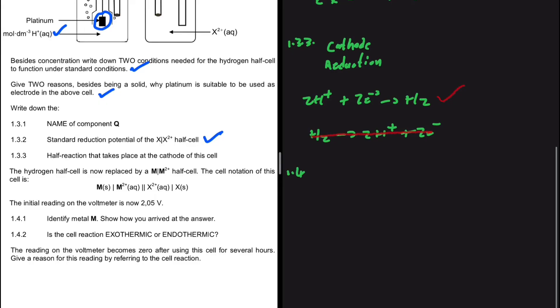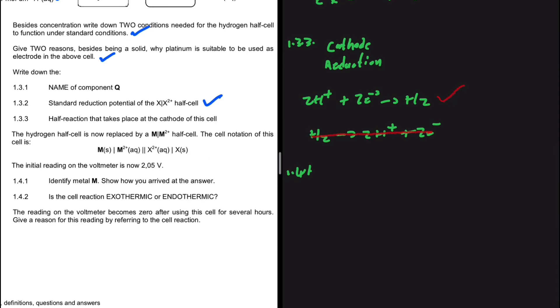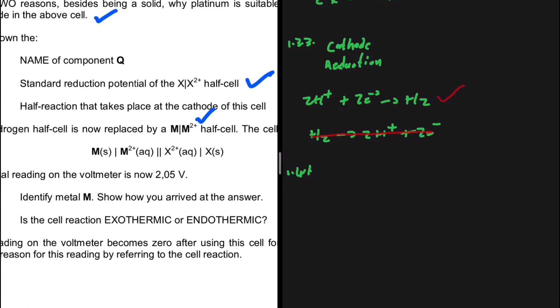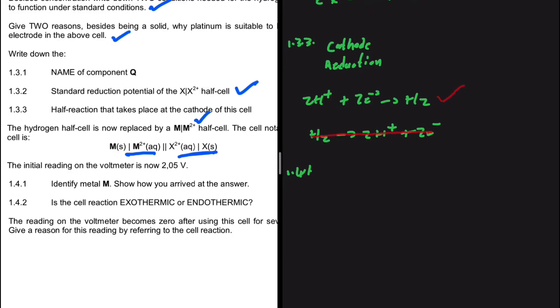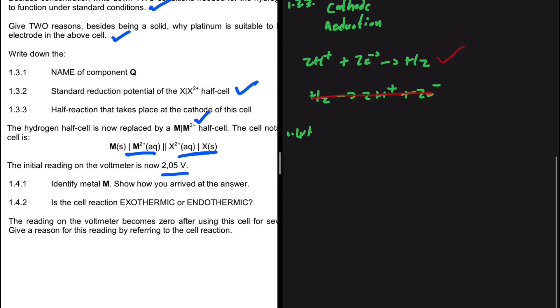1.4.1. The hydrogen half-cell is now replaced with an M/M2+ half-cell. The cell notation of this cell is given, and we're given the cell notation of the cell. This is our anode and this is our cathode. What is the initial reading on the voltmeter? It is given as 2.05 volts. And the first question, identify metal M. Show how you arrived at the answer.